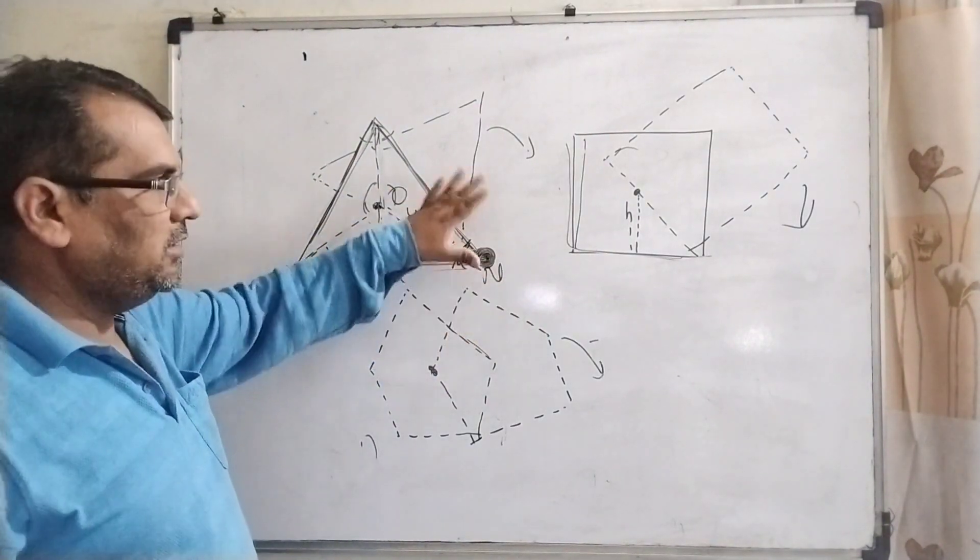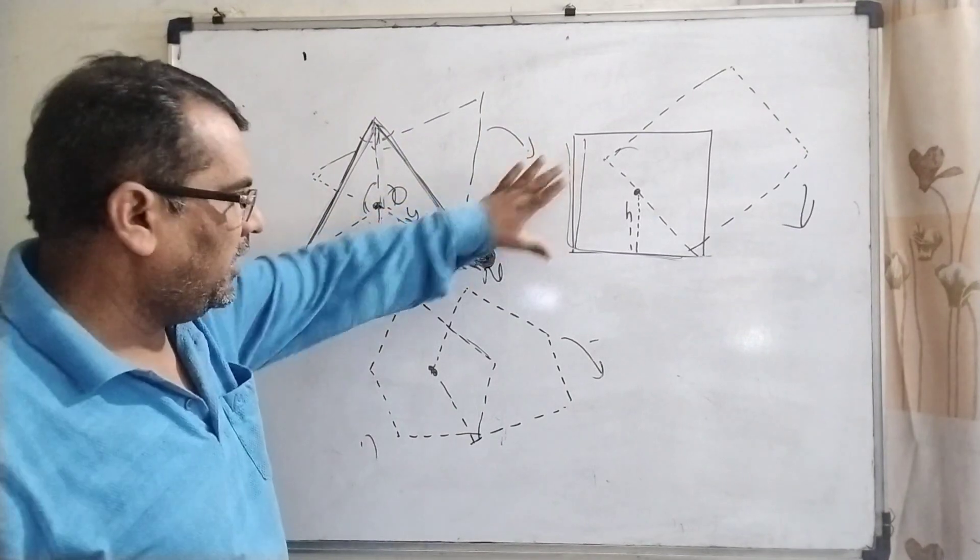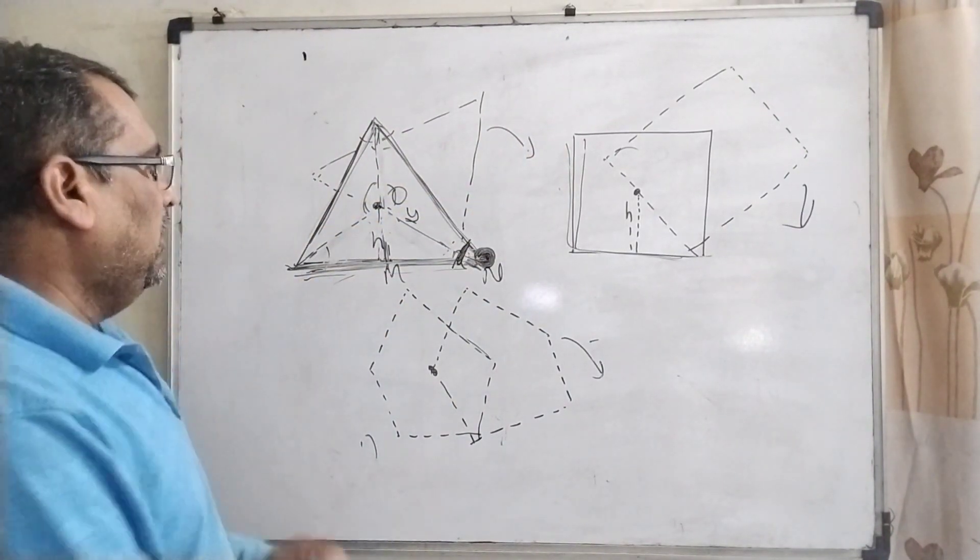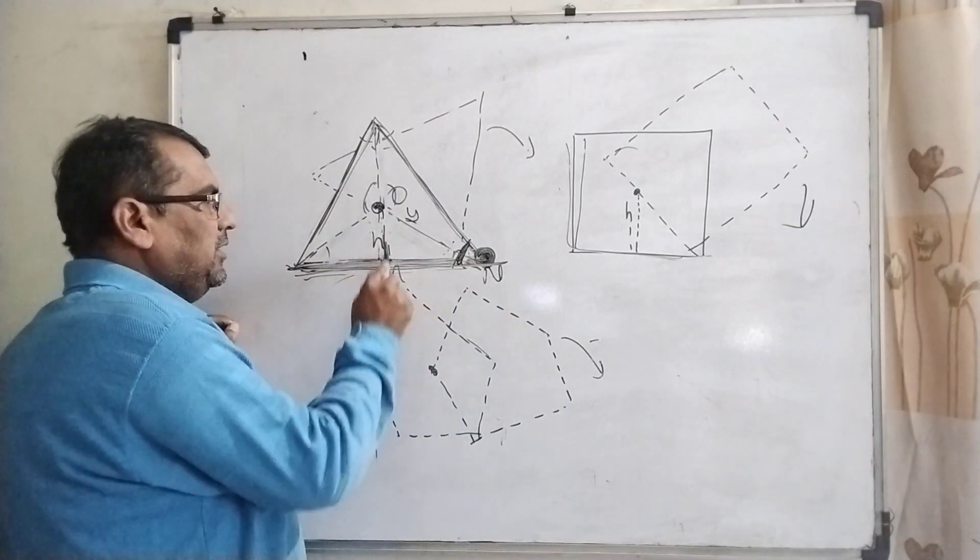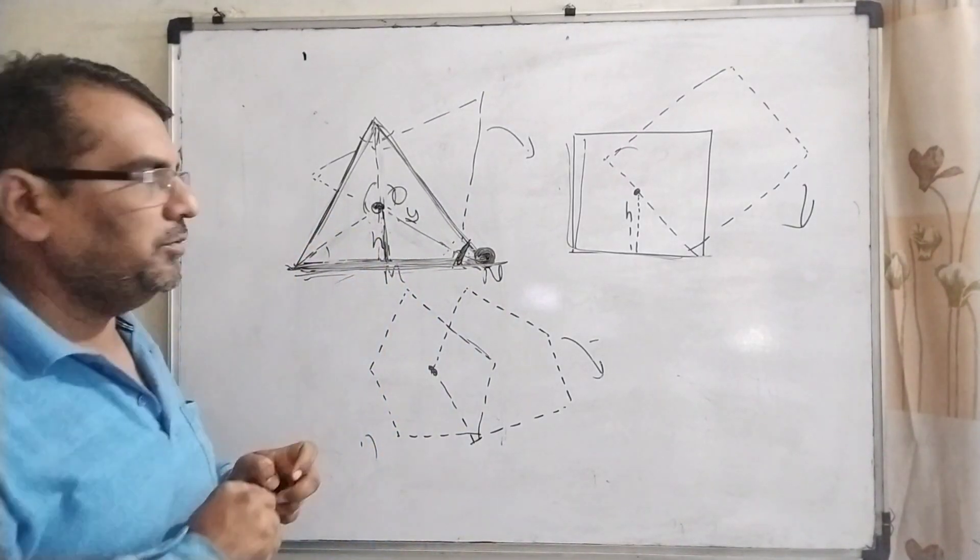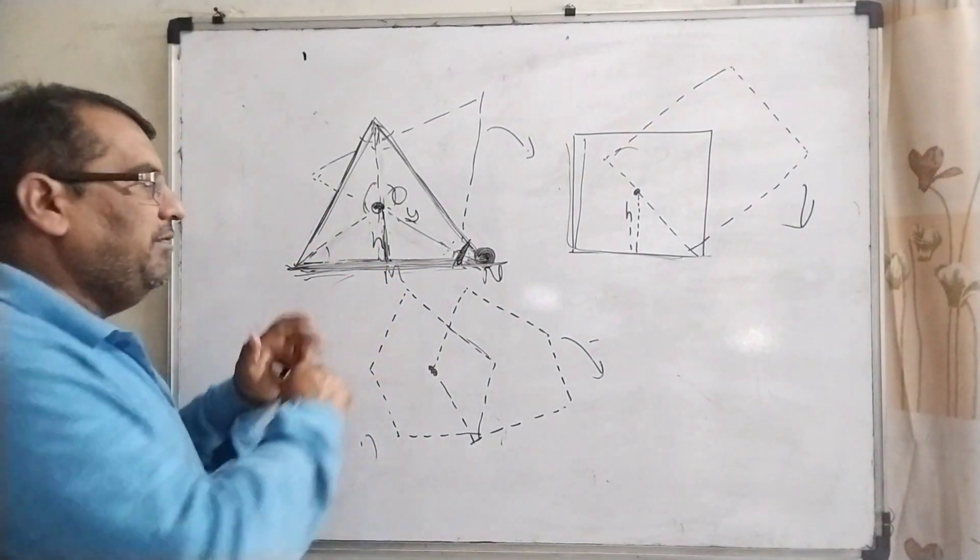Now clearly you can see that you have given three figures - these are polygons: here triangular, this is square, this is pentagon. And the center of mass is given that from the ground it is at height h above the ground.